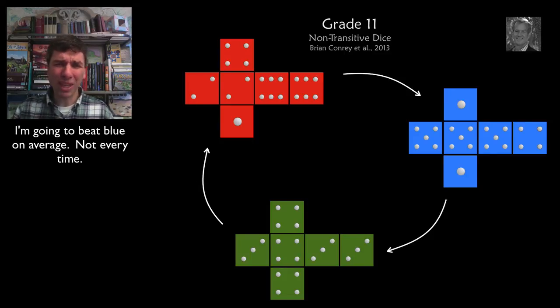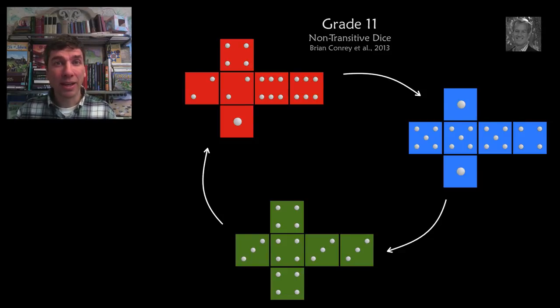and then green is going to beat red. That's unusual, but in actual fact, the work of Brian Conrey shows that this happens about a quarter of the time as your dice becomes really big. So these dice only have six faces, but if you have really big dice, it looks like this happens a quarter of the time,